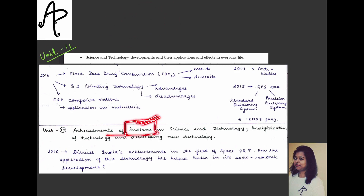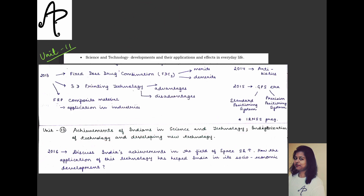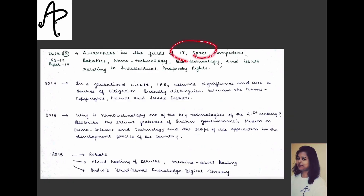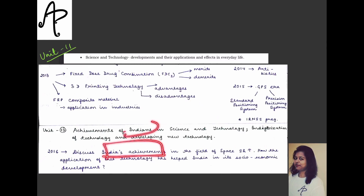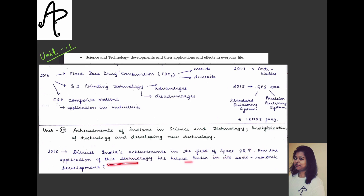Unit 12 covers indigenization of technology — how do you indigenize technology locally — and developing new technology, with a question from 2016 on this. It also covers India's achievements in the field of space science and technology. Although space is a separate topic, the syllabus asks you to understand India's achievements and how the application of this technology has helped India in its socio-economic development.